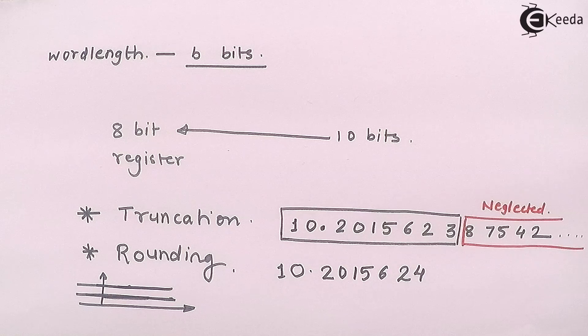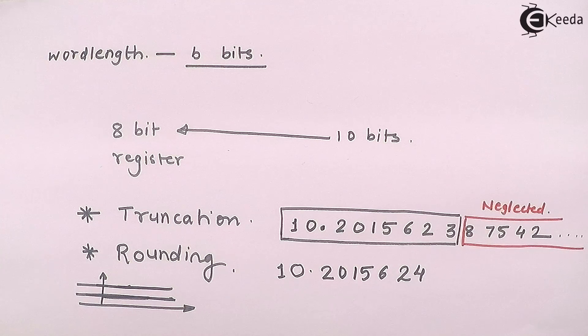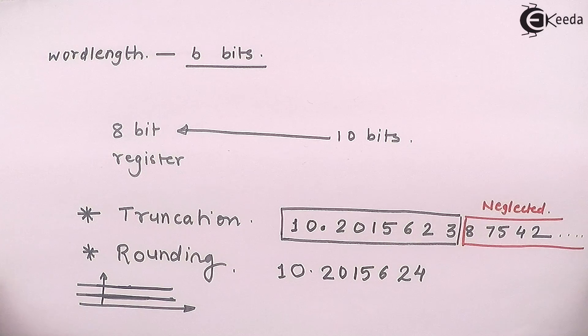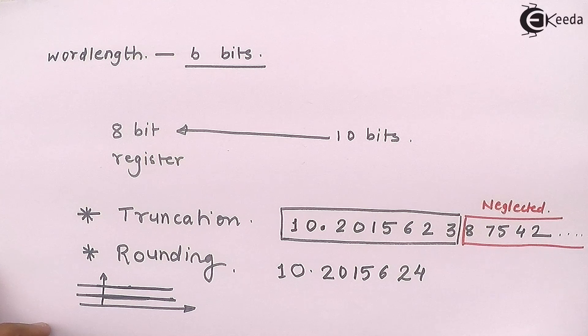So rounding can give me a plus minus approximation or a plus minus error expectation. Whereas truncation will always give me a minus, it will not be always minus, it will in some cases also be plus, but in general it will be the lesser number. So it will be minus. So this is how we use the methods called truncation and rounding.